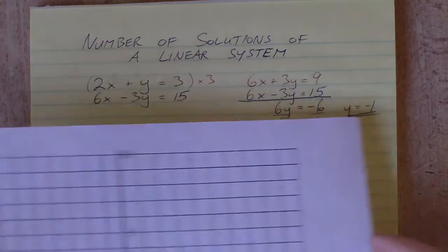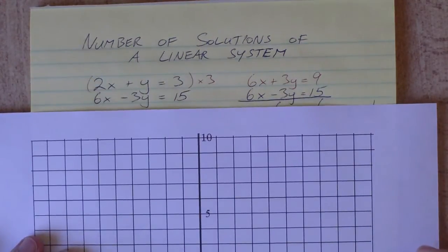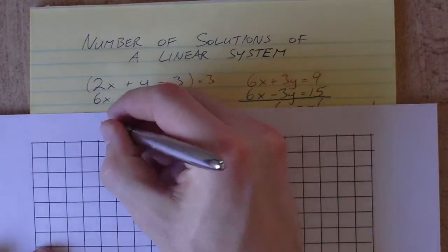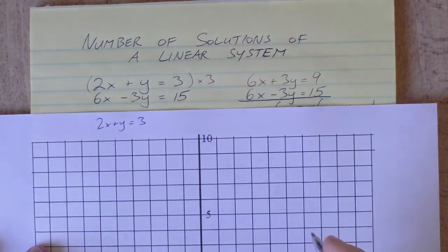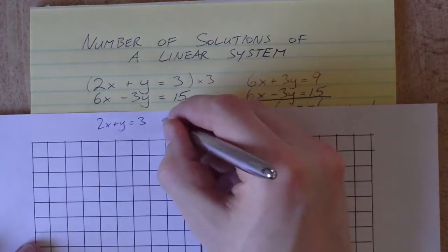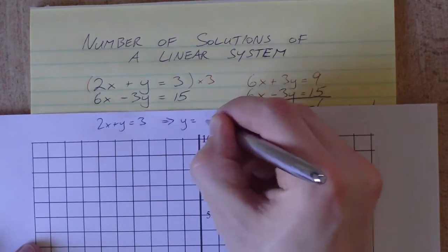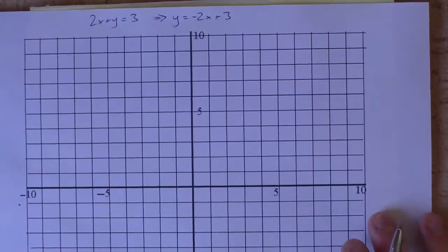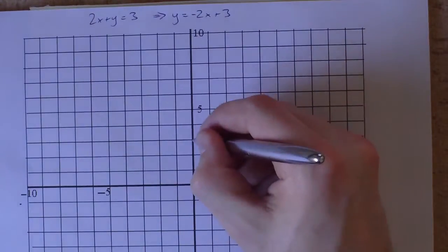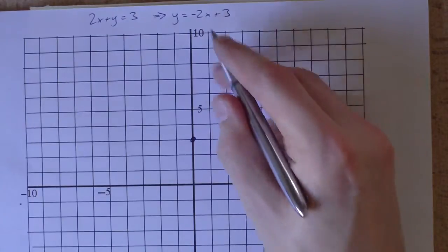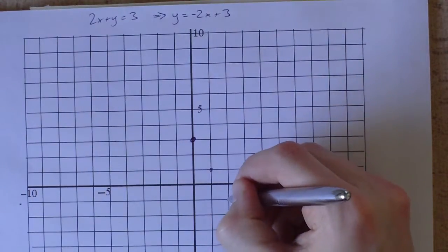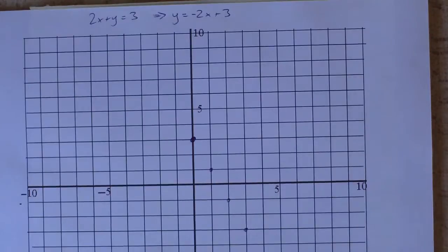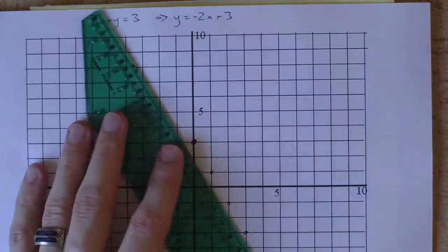If we take these two equations we can graph them. Let's take 2x plus y equals 3, rearrange and solve for y. That turns into y equals negative 2x plus 3. We can graph that: y-intercept of 3, slope of negative 2, down 2 over 1. We can graph that line.